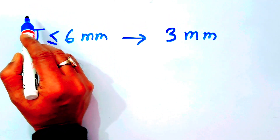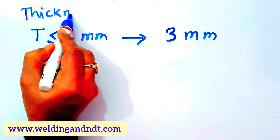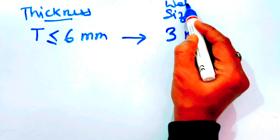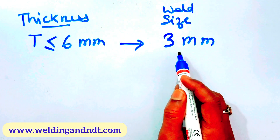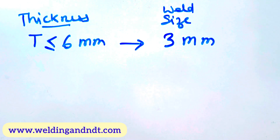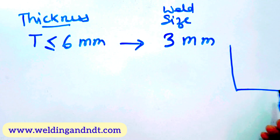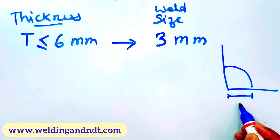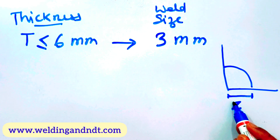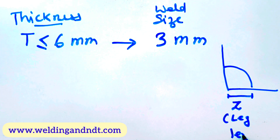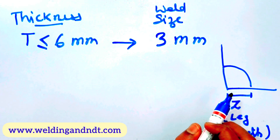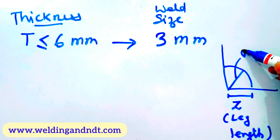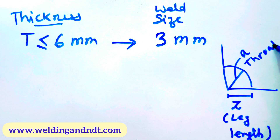This is the thickness of the base metal and this is the fillet weld size. Now there may be a question: is this 3 mm the throat or the leg length? If I draw the fillet weld, the distance from the root to the toe is called the leg length, denoted by z. The distance from the root to the face of the weld is called the throat, denoted by a.